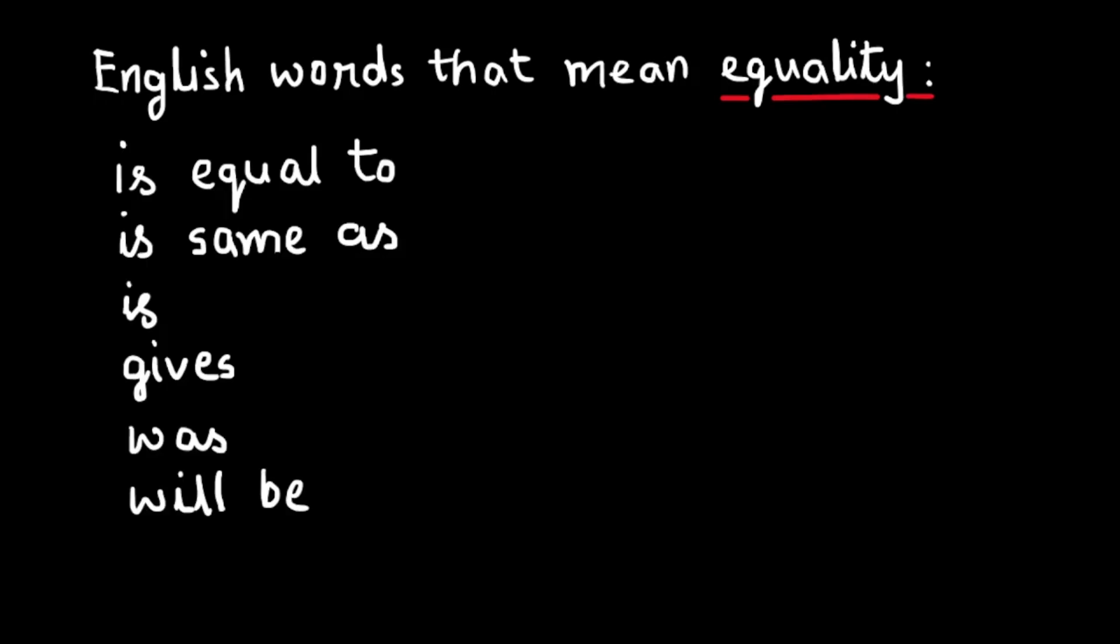There are so many English words that mean equality between two expressions. These words are: is equal to, is same as, is, gives, was, will be. You can use these words to link expressions and make sentence equations.